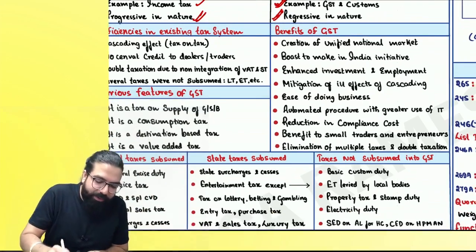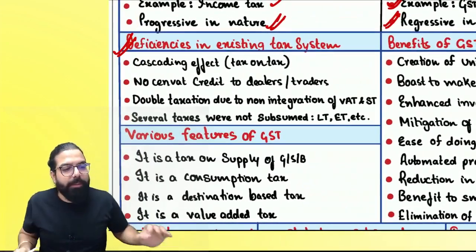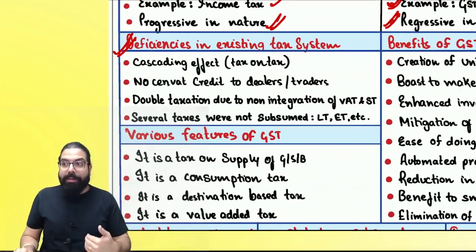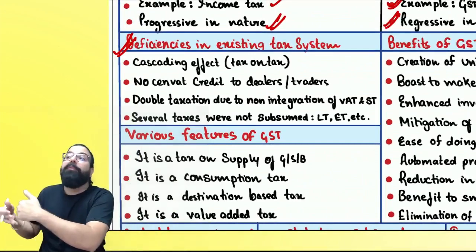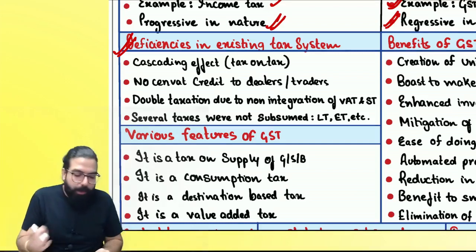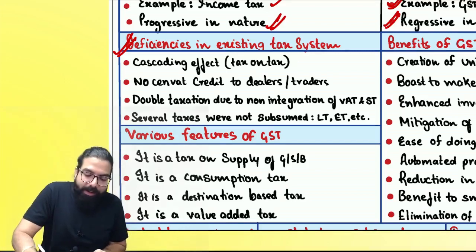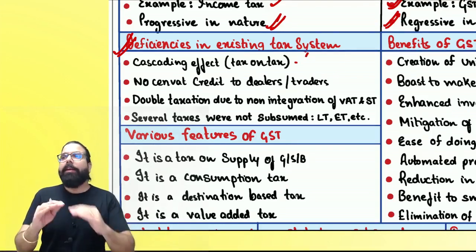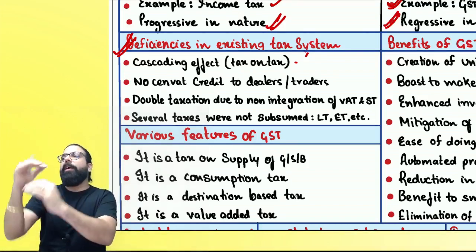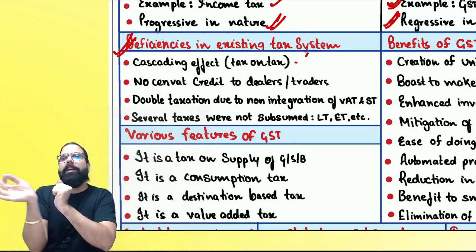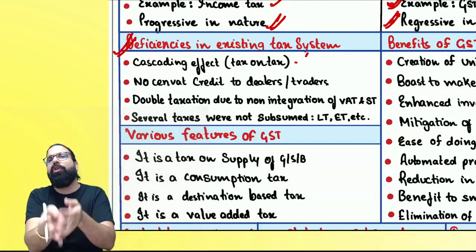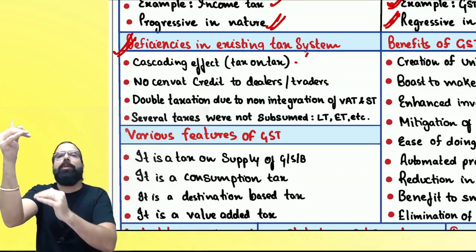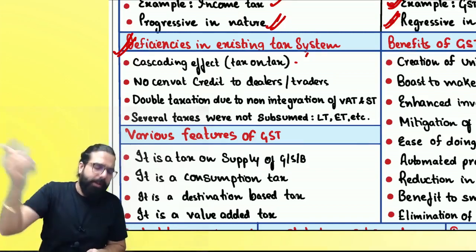Next, deficiencies in the existing tax system — the problems before 1st July 2017, which caused GST to come in. First: the cascading effect — tax on tax. When one person manufactured and sold, excise duty was charged. When I bought it, that became part of my cost, and again tax was being charged on top of that.